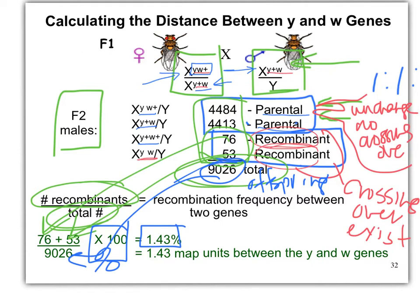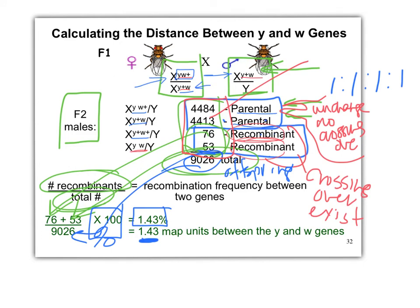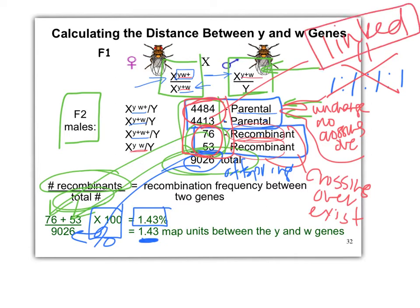Why does this make sense? It's a very close distance, which means they are highly linked. Does that make sense with these numbers? They're way off of 1 to 1 to 1 to 1 — not even close. These are super high and these are super low. They're way off, which means they're highly linked. They're not 1 to 1 to 1 to 1 — they're linked, closely linked. This is a small number. They are close together on the same chromosome.